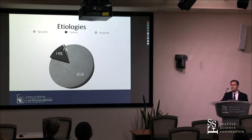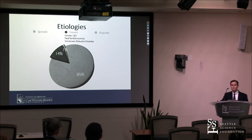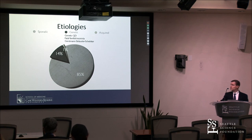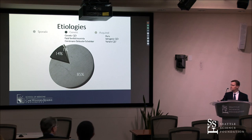The most common cause of prion disease is sporadic, making up about 85% of all cases. About 10 to 15% — closer to 10% in our country — are genetic forms, named according to their mutation and neuropathological and clinical characteristics: genetic CJD, fatal familial insomnia, or Gerstmann-Sträussler-Scheinker syndrome. The ones you hear the most about are by far the least common — the acquired forms — including Kuru, iatrogenic, and variant CJD.